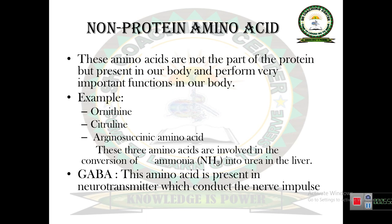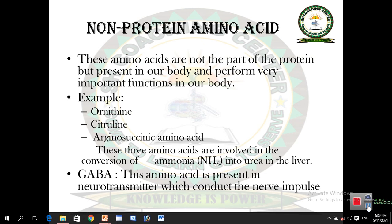The second group is non-protein amino acids. In this group we discuss amino acids which are not part of protein but are present in our body and perform very special functions. For example, ornithine, citrulline, and argininosuccinic acid are three amino acids present in our body that perform individually important functions, like taking part in the urea cycle. The urea cycle is a cycle in which ammonia is converted into urea in the liver, and these three amino acids take part in the urea cycle.